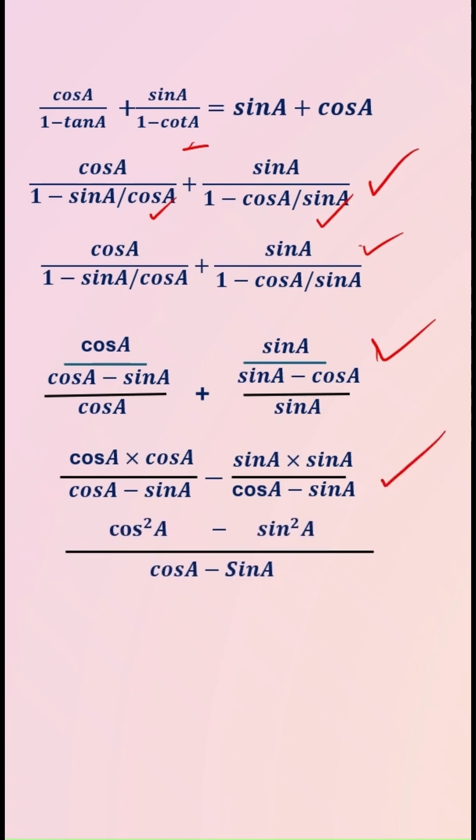Cos A multiplied by cos A. Here we take cos A minus sin A as LCM. When we take minus sin A common it will come to here. So cos square A minus sin square A divided by cos A minus sin A.